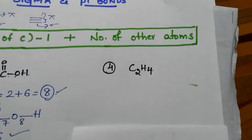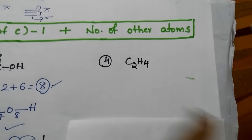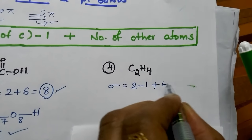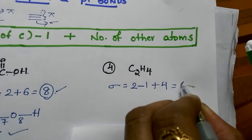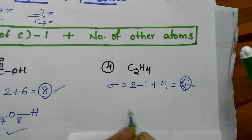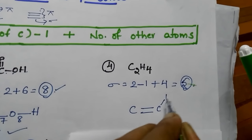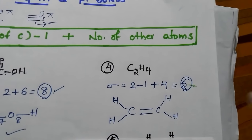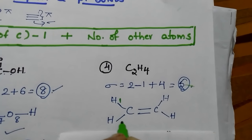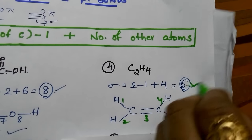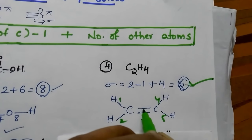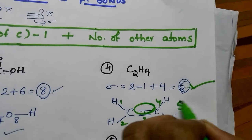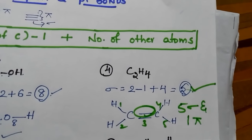C2H4. How many carbons are there? 2 carbons. So 2 minus 1 plus number of hydrogens is 4 — that's 1 plus 4, giving 5. Counting the sigmas: 1, 2, 3, 4, 5 — this formula worked out. And one more bond is there that is called pi. So in this case, 5 sigma and 1 pi bond is present.